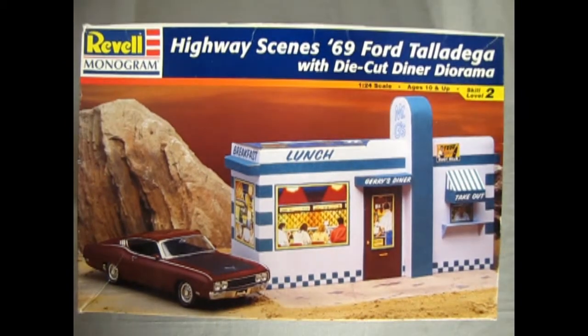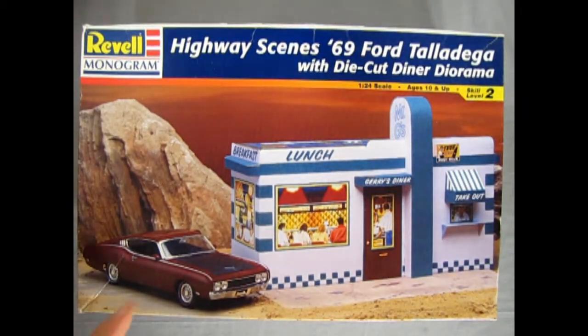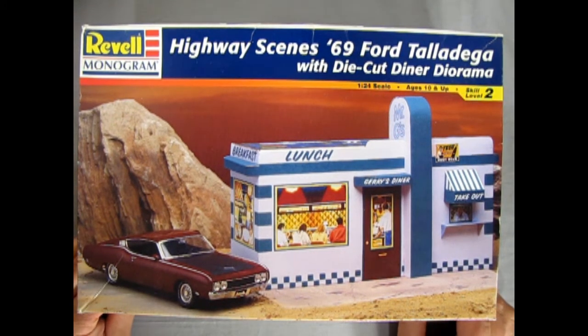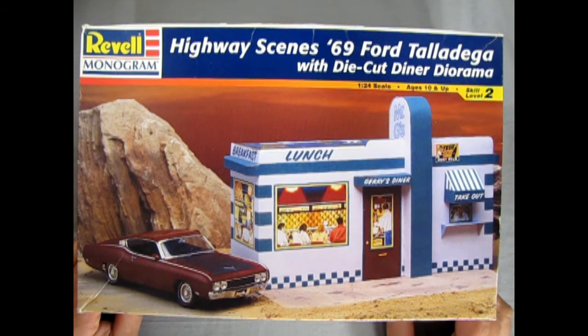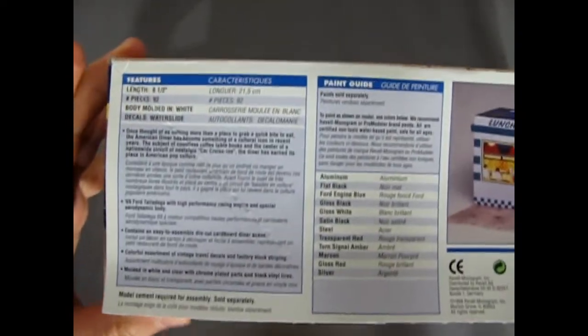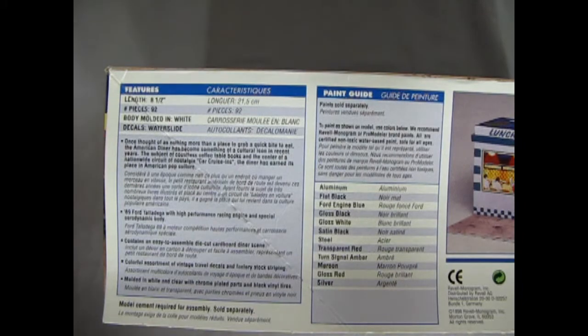And now we've got a really special treat, this is a Revell Monogram highway scene 69 Ford Talladega with a diner diorama which is really cool. The Talladega was a really hot car back in the day and of course getting the diner is always a cool treat. This is a longer box.